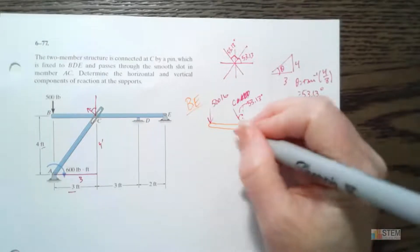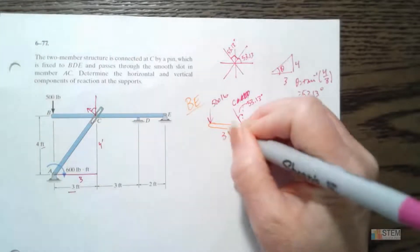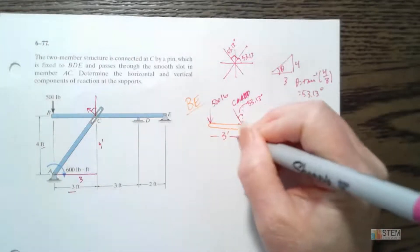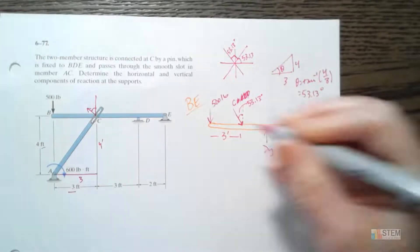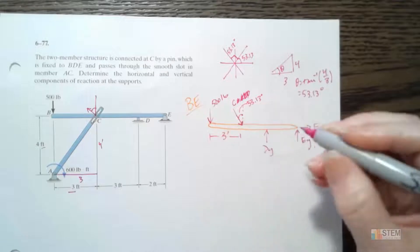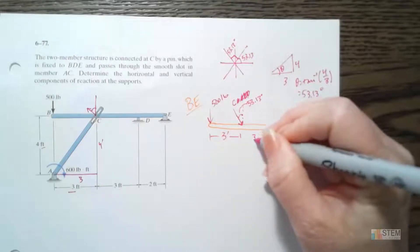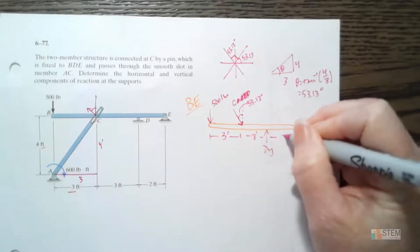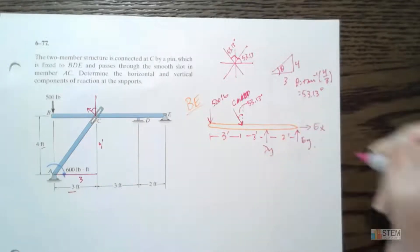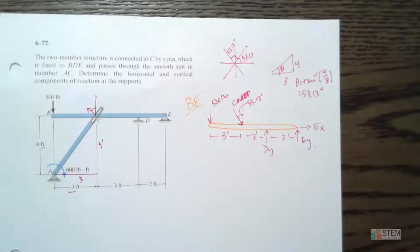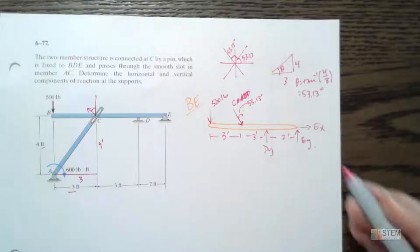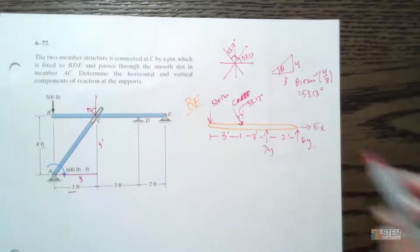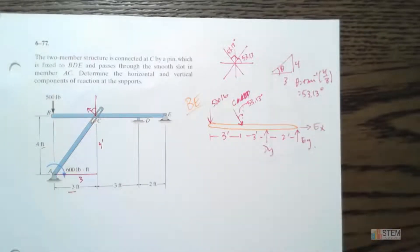Let's label our distances on the member: 3 feet here, another 3 feet, and then 2 feet. That is our first diagram.